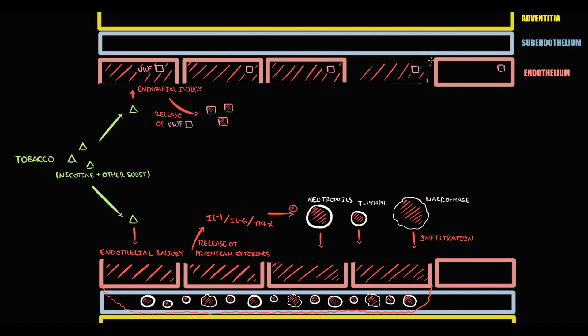In addition to this, with damage to endothelial cells, subendothelial collagen becomes exposed. And we know that exposed subendothelial collagen attracts platelets. But platelets cannot bind to subendothelial collagen directly. They need a linkage molecule, and this linkage molecule is von Willebrand factor.